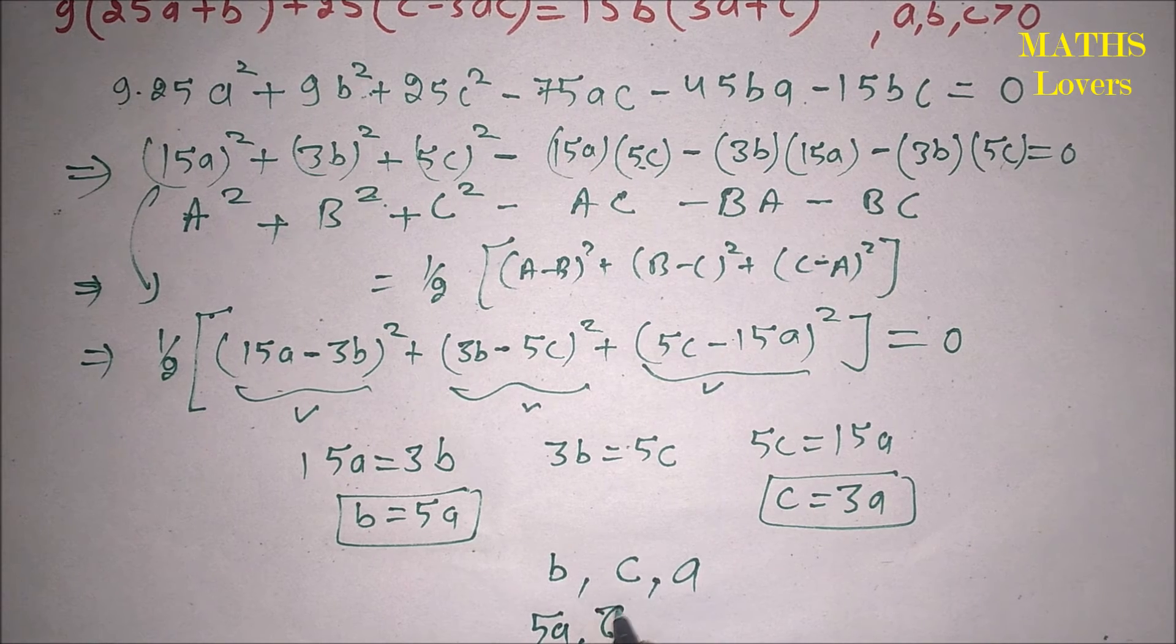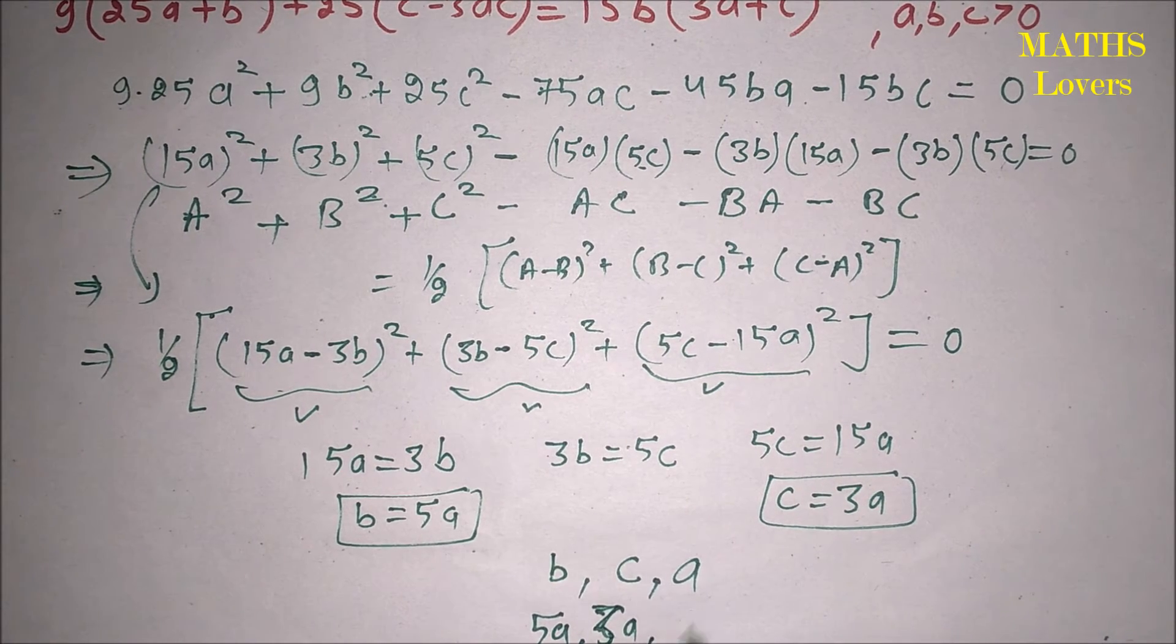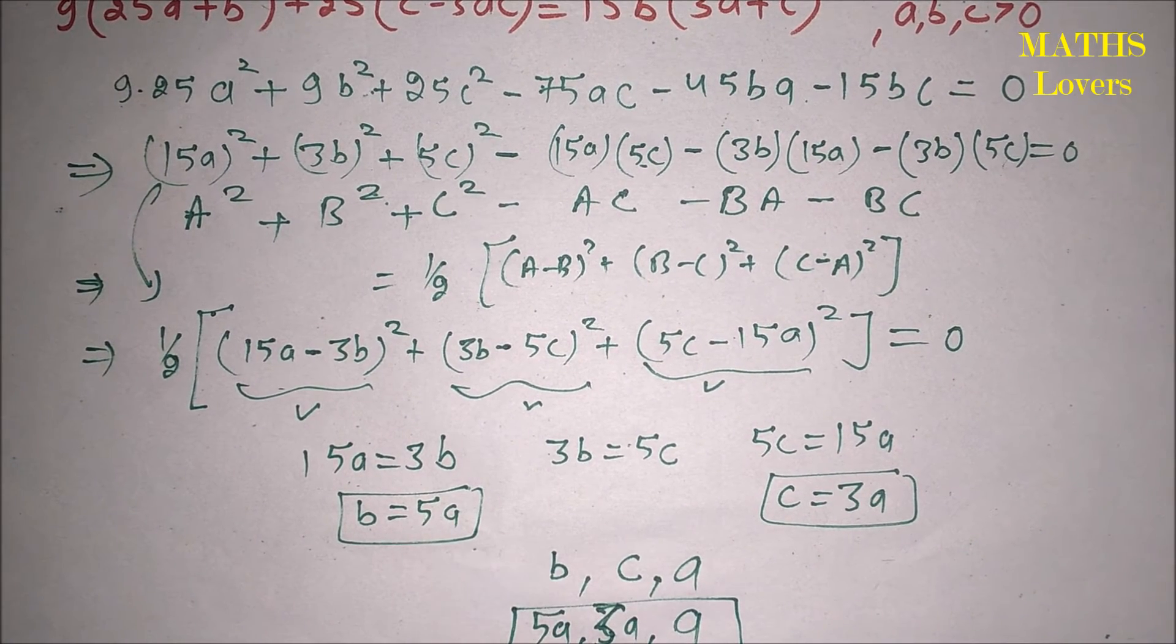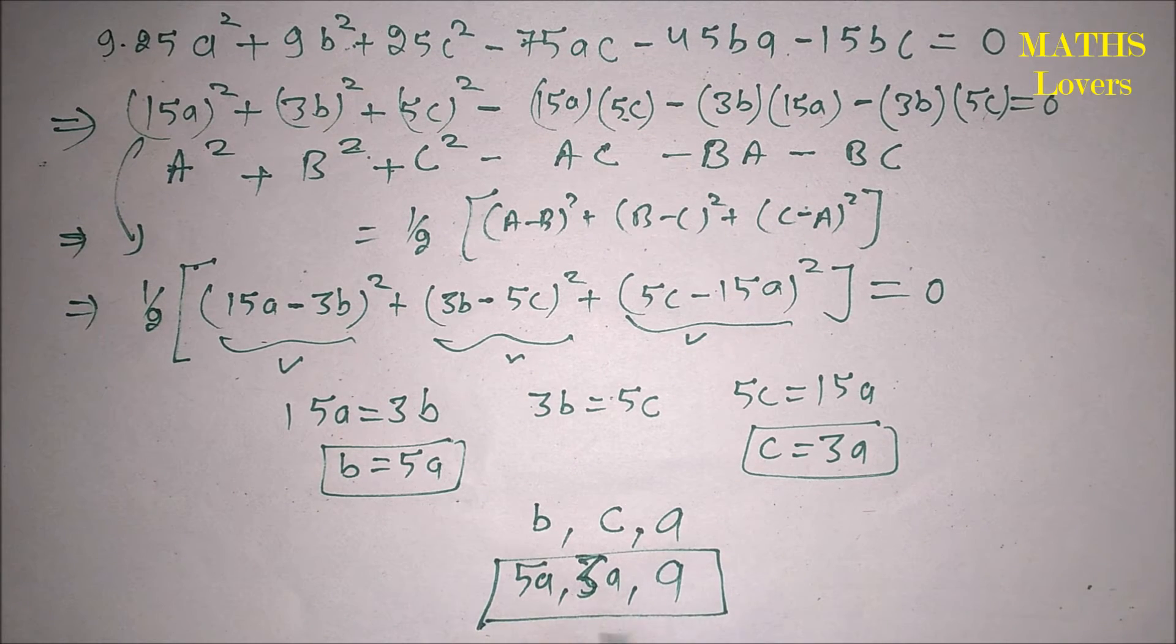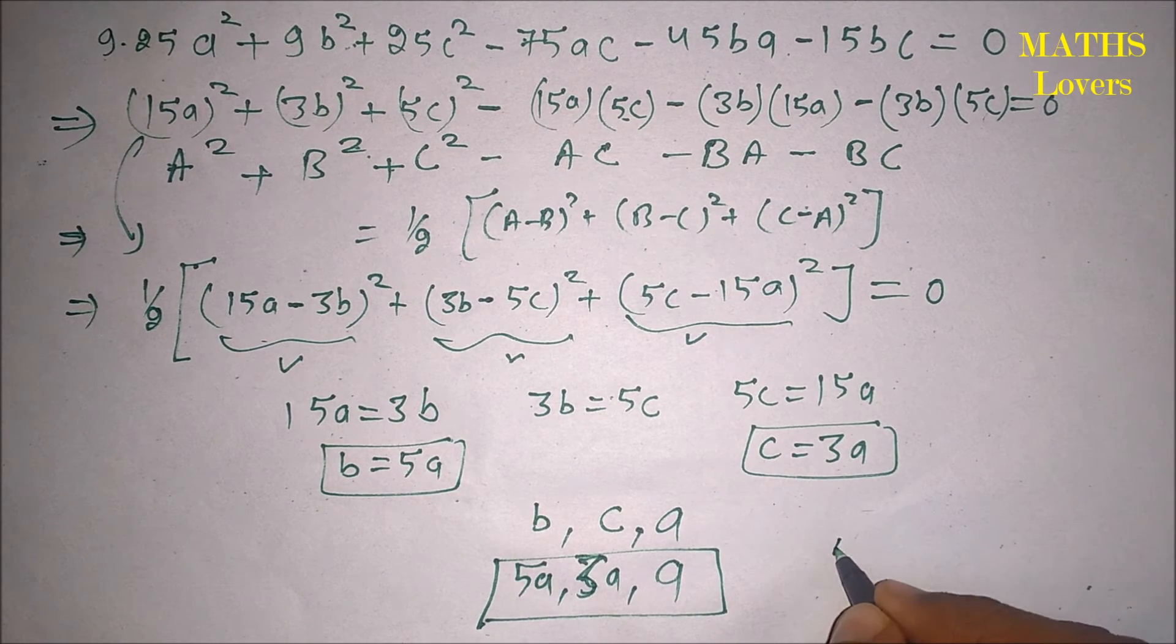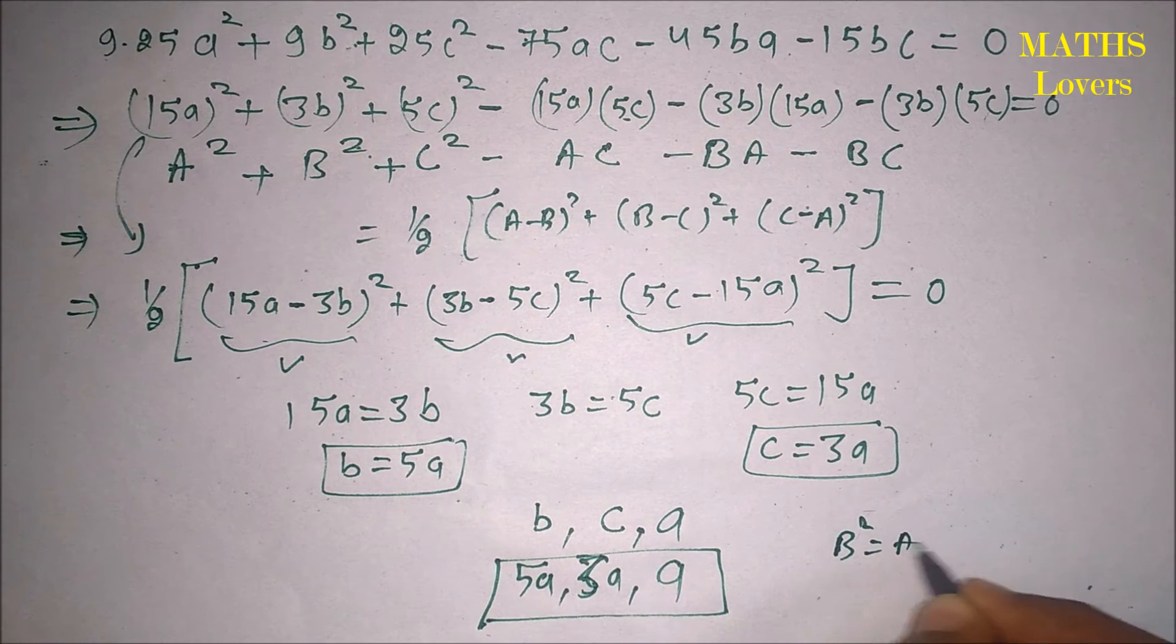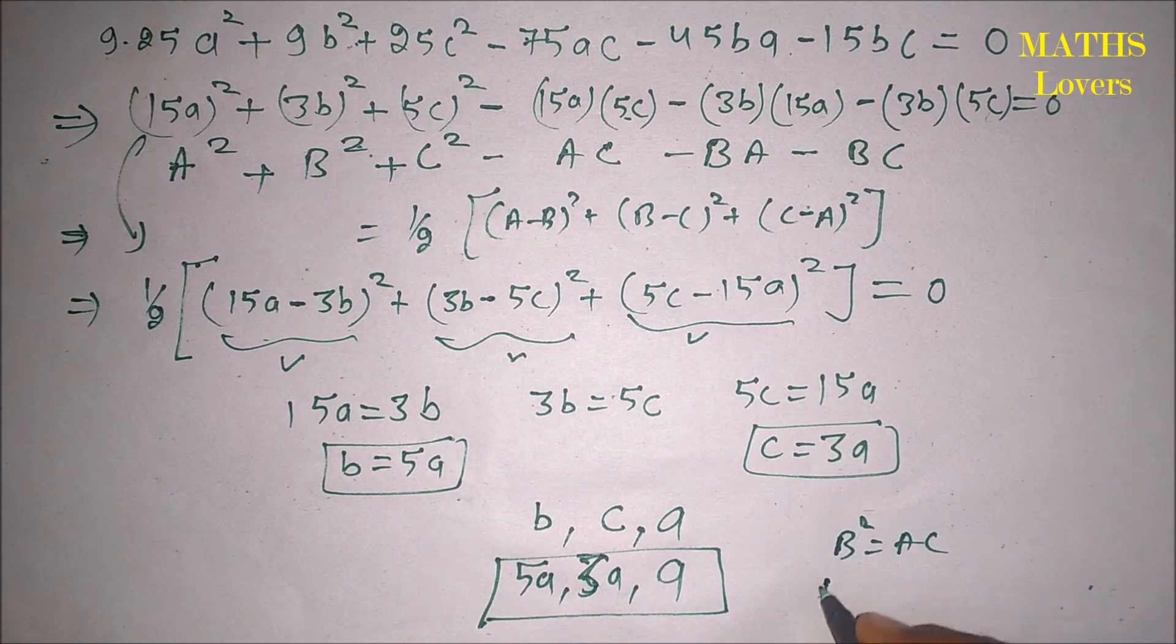So we can check it like this: if it will be in GP then GP's condition is b² equal to ac. And if it is in AP